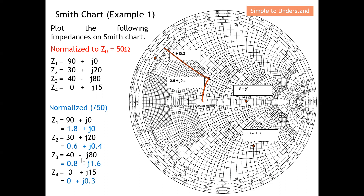Next, I draw the third point, which is 0.8 - j1.6. The key is to first locate 0.8 on the resistivity line — counting 4, 5, 6, 7, 8 — here is 0.8. Since this is a minus term, I know the point will be below the resistivity line. Looking at the arcs below: 1, 1.2, 1.4, and here is 1.6. The intersection of 0.8 and 1.6 gives the point 0.8 - j1.6. Remember: positive imaginary means above the resistivity line; negative means below.